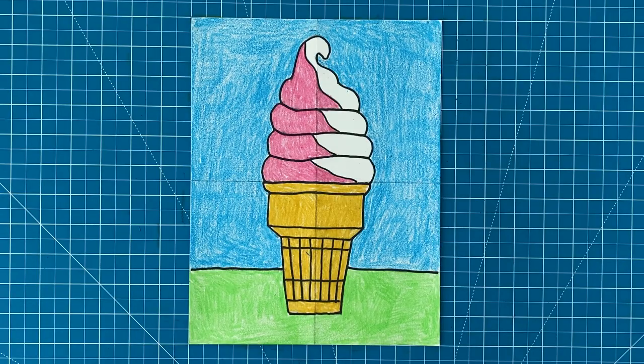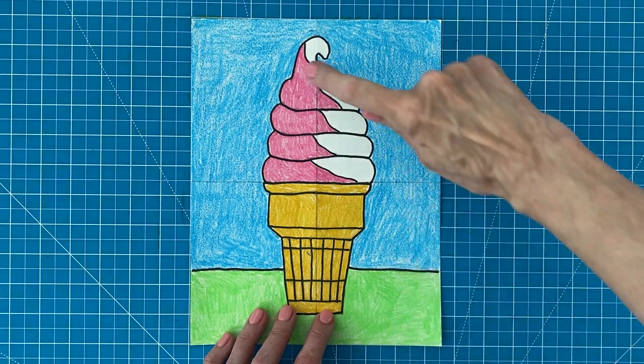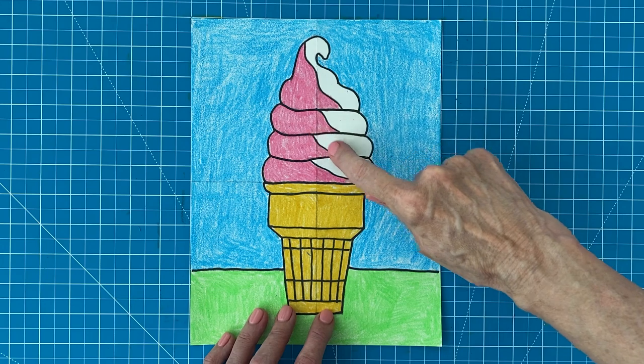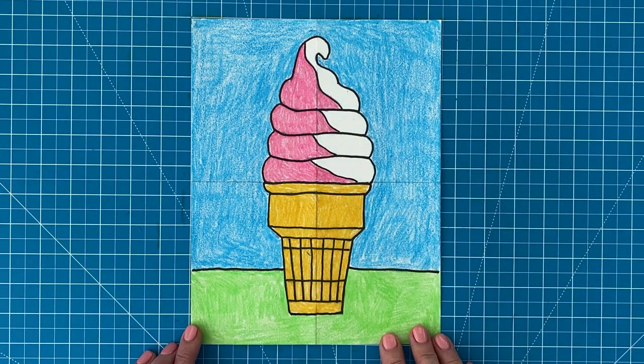One of the things I like most about this ice cream cone drawing is its curly top and the lines that separate the ice cream colors. They make for all kinds of fun flavor combinations.